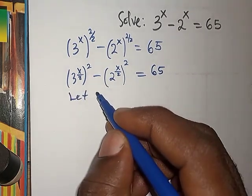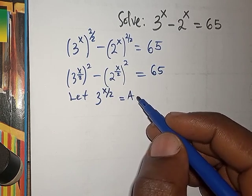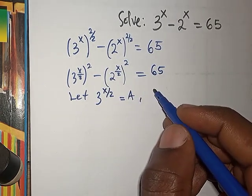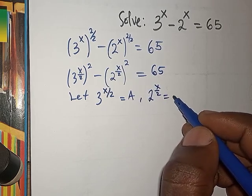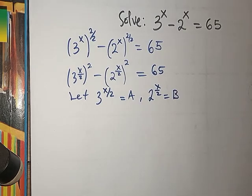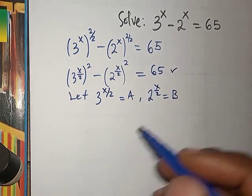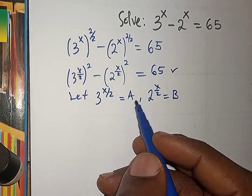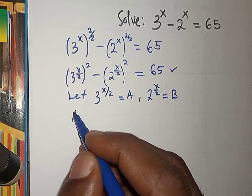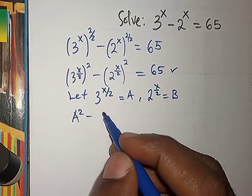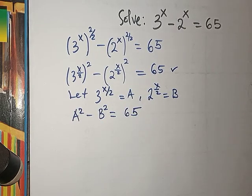We let A equal 3 raised to the power x over 2, and B equal 2 raised to the power x over 2. Replacing into the equation, anywhere we see 3^(x/2) we put A, and anywhere we see 2^(x/2) we put B, giving us A squared minus B squared equals 65.